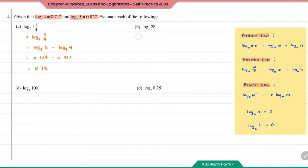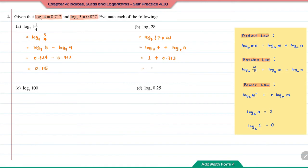Question B: 28 — we can write it as the multiples of 7 times 4. Using the product law, I can write this as log base 7 of 7 plus log base 7 of 4. Log base 7 of 7 is equal to 1, and the value of log base 7 of 4 is 0.712. Therefore, the answer is 1.712.